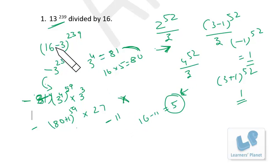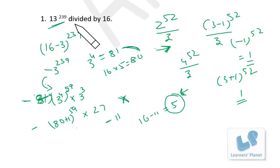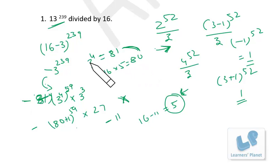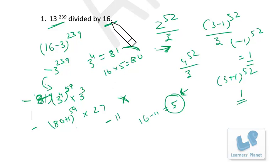The important thing is to find the relationship between the base and the divisor — spotting a number in the powers of 3 that gives a difference of 1 with a multiple of 16, which was 3^4 = 81. I hope this problem is clear. Let's move to the next one.